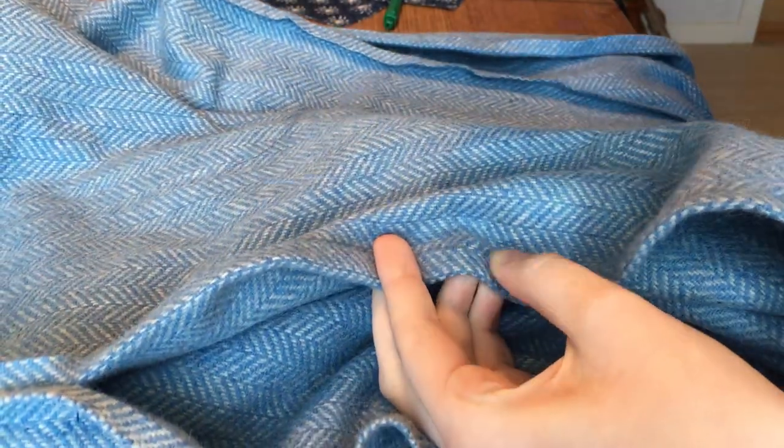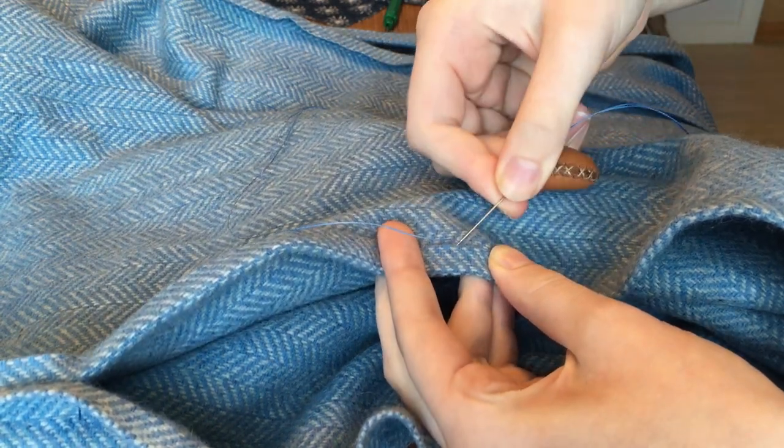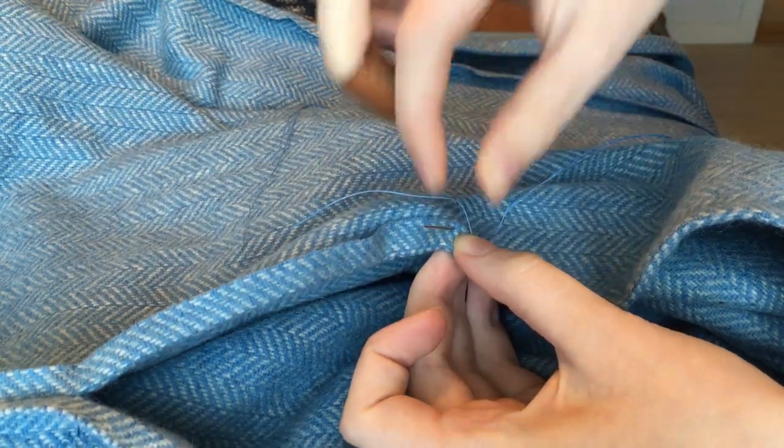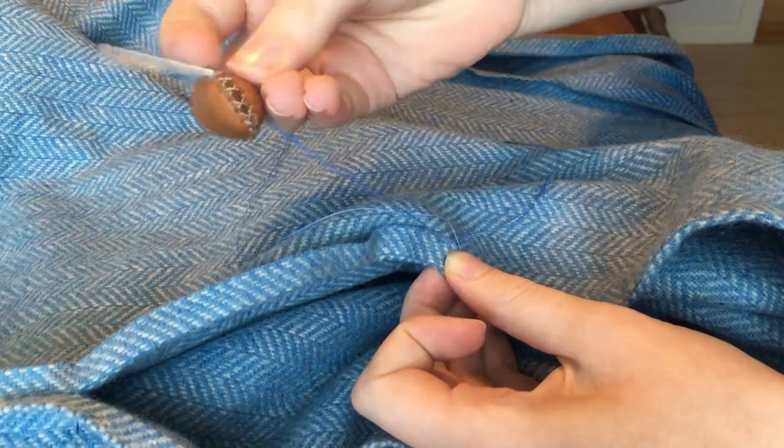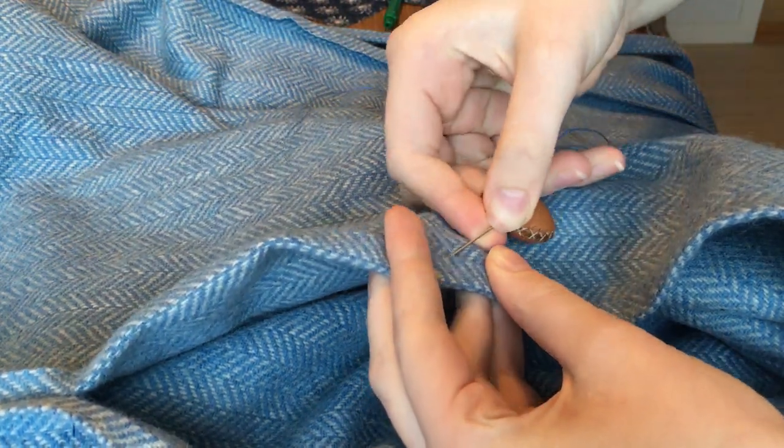Once the straps were done I finished the edges of the skirt. Instead of felling the raw edges as I did on my underdress I pressed the edges away from the stitches and tacked them down with whip stitches. This wool is so tightly woven I didn't feel the need to completely cover and shield the raw edges.